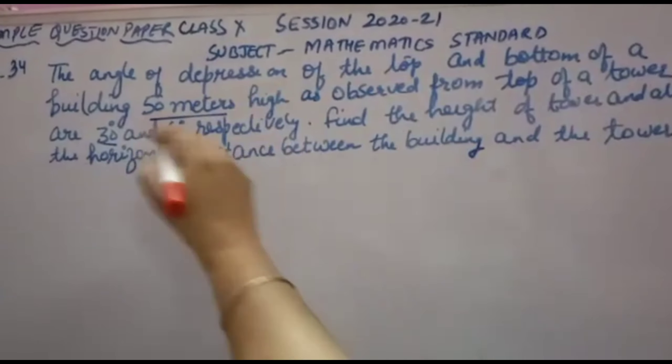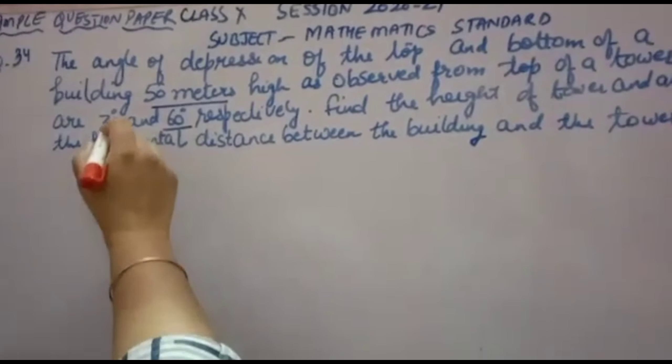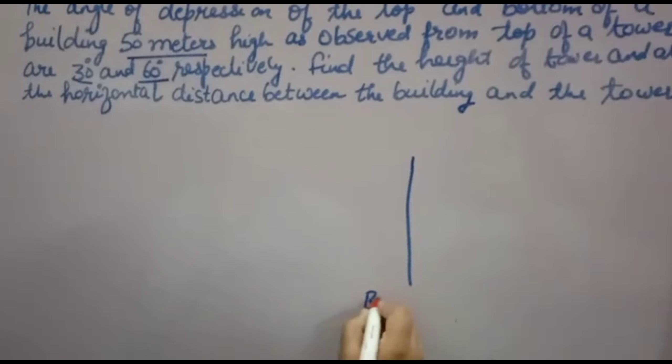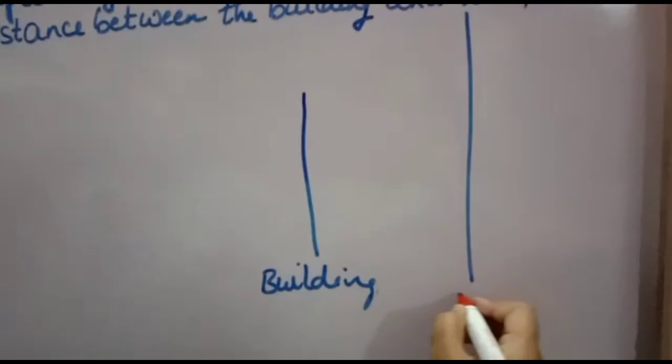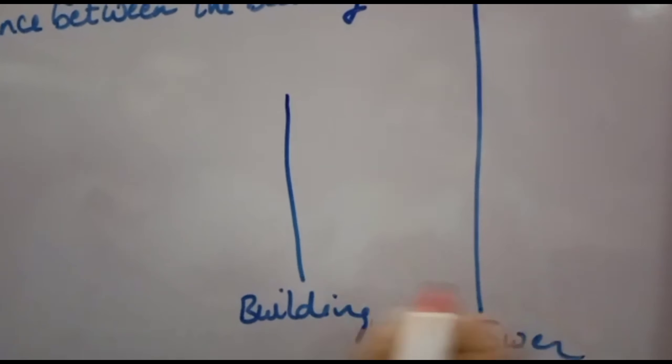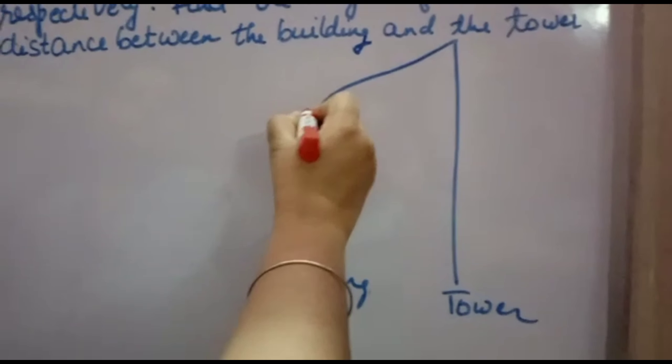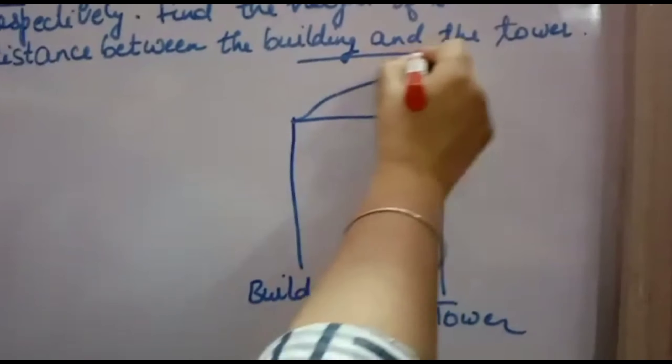The angle of depression of top and bottom of a building 50 meter high as observed from top of a tower are 30 degree and 60 degree. One building is there and one tower is there.